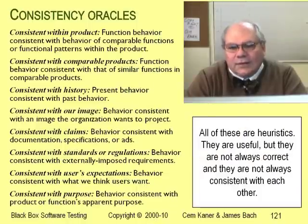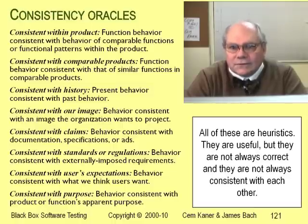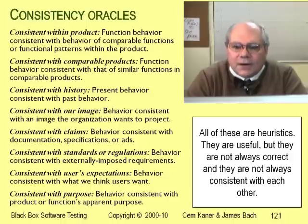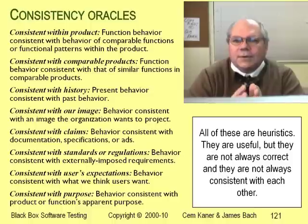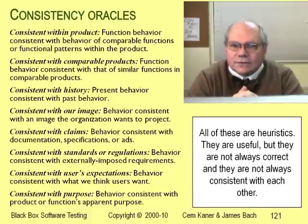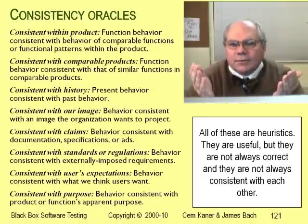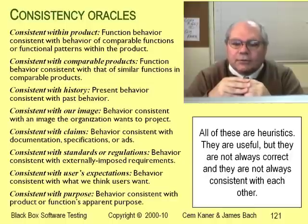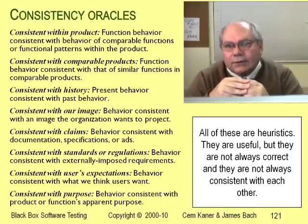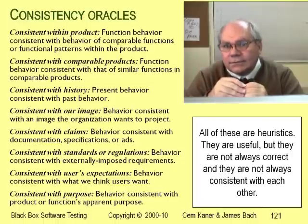Bach and Bolton approached this in a different way. They asked: what's the basis for the feeling when a program does something that doesn't feel right? How do testers argue that a program isn't working correctly? They developed a list of consistency heuristics that describe what they think are most people's expectations most of the time. For example, when you compare a program to a specification, an advertisement, or a user manual, you're looking for inconsistencies with the company's claims. As another example, when you compare results with a reference program, you're looking for inconsistency with a comparable product. But there are limits to comparability — two products might be comparable in some ways but incomparable in others.